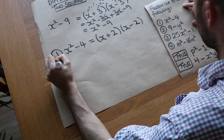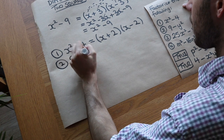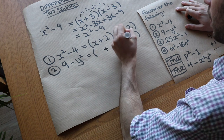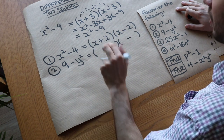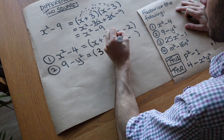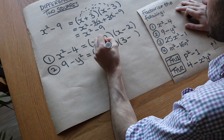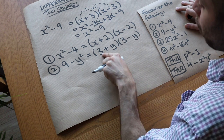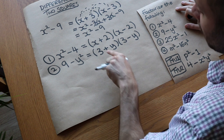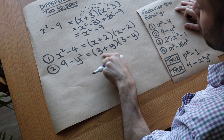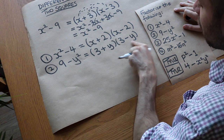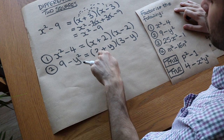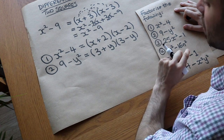Next we've got 9 minus y squared. Again, two brackets — plus in one, minus in the other. The square root of 9 is 3, and the square root of y squared is y. Note that the order matters here: y minus 3 is different from 3 minus y, so make sure you put the square root of the first term as the first term of each bracket.